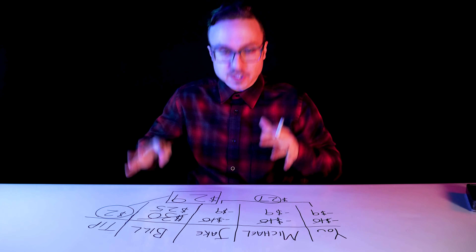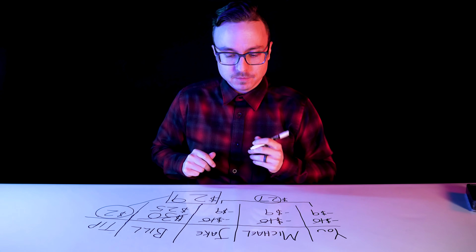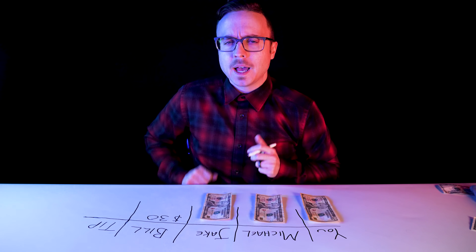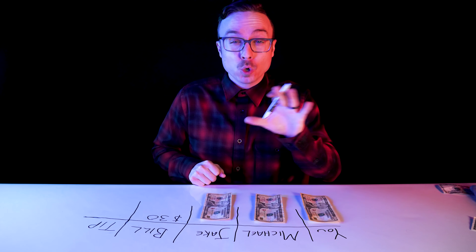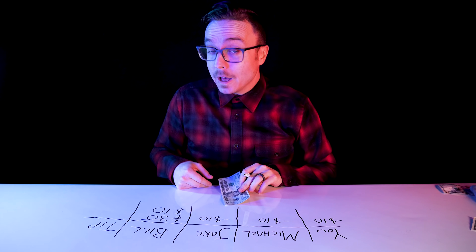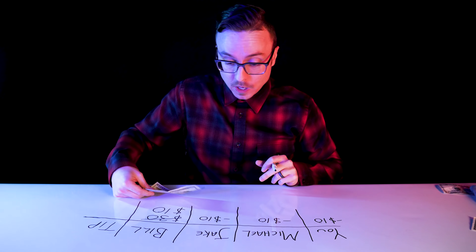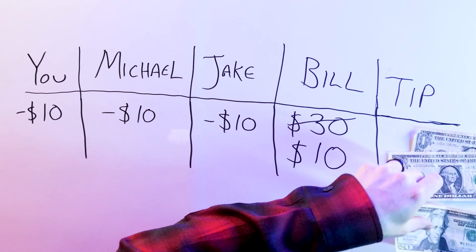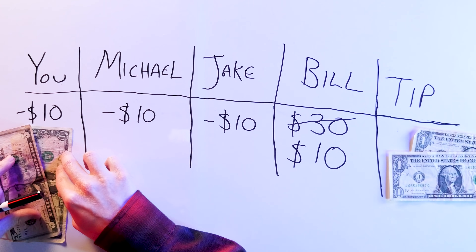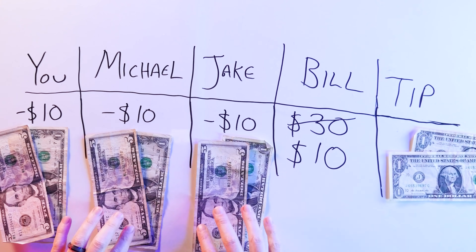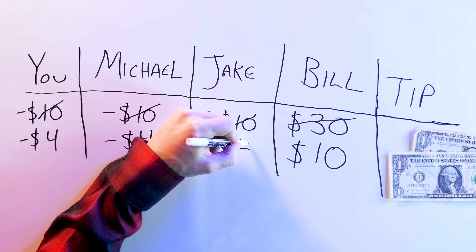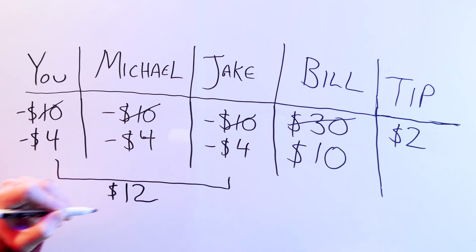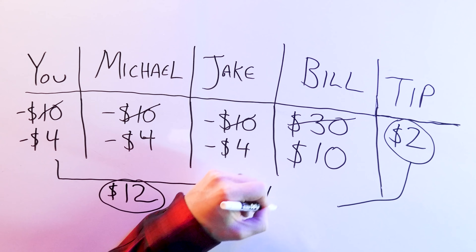Before we break down this riddle, let's try it with different numbers and just see what happens. Let's say you still pay a $30 bill, but this time the server realizes there's been a huge mistake and the total should have been only $10. So now the busboy gets $20 to return to you, Michael, and Jake, which he also cannot divide equally. You don't know about the exact price change, so the busboy takes his $2 tip, leaving $18 to cleanly divide three ways. He refunds each of you $6, reducing your effective price to $4 each. So you paid $4 plus $4 plus $4, which is $12, plus the busboy tip of $2 equals $14.